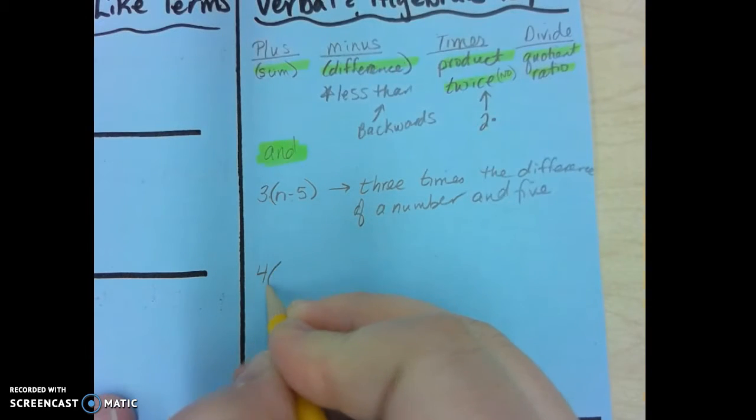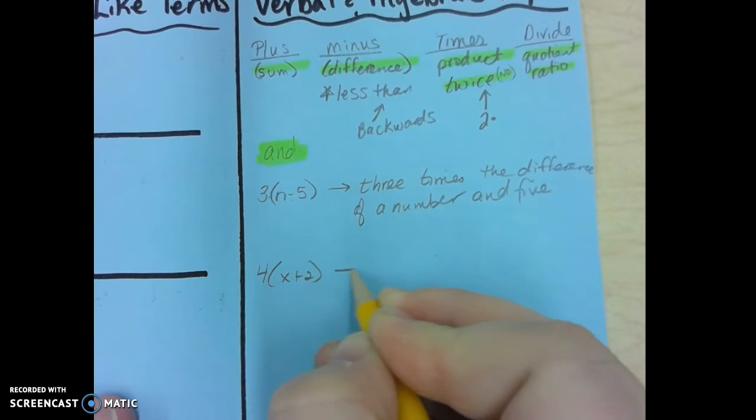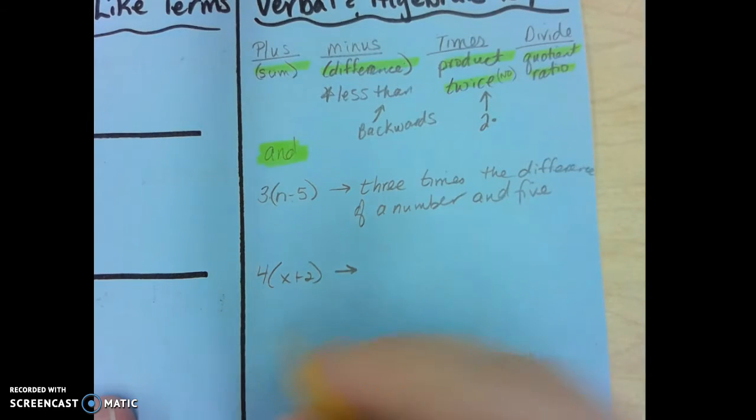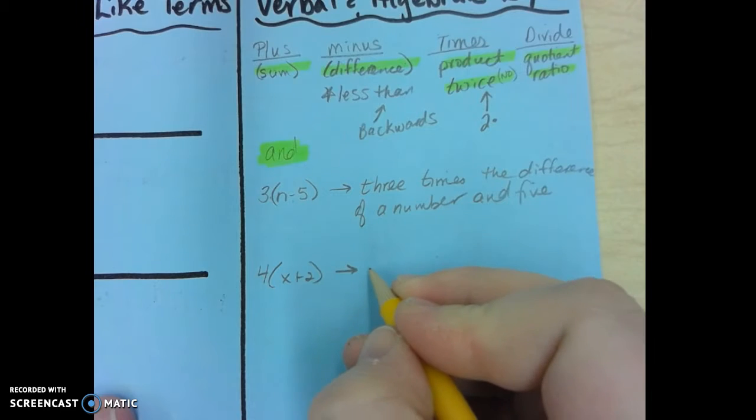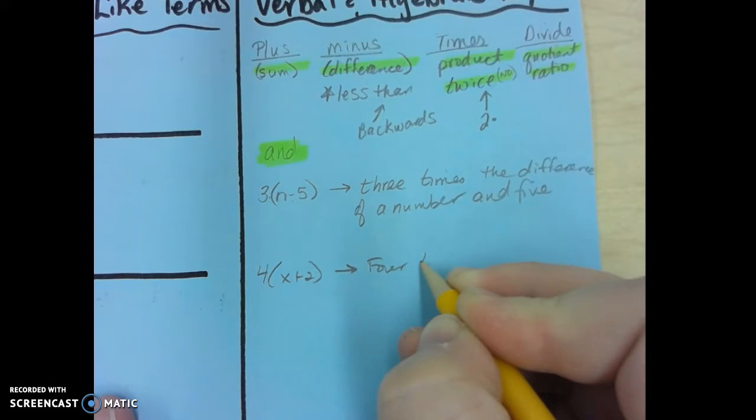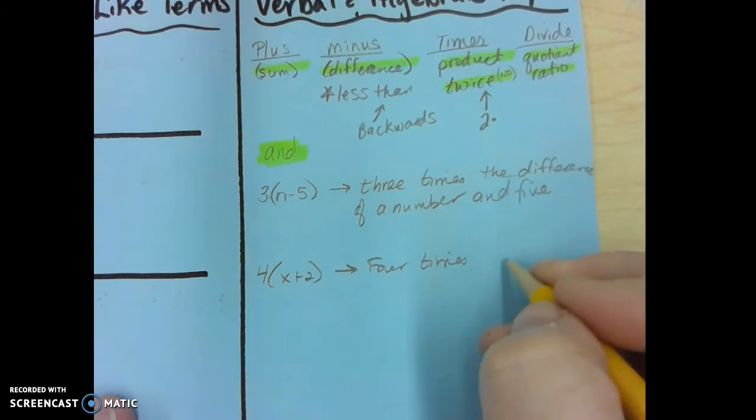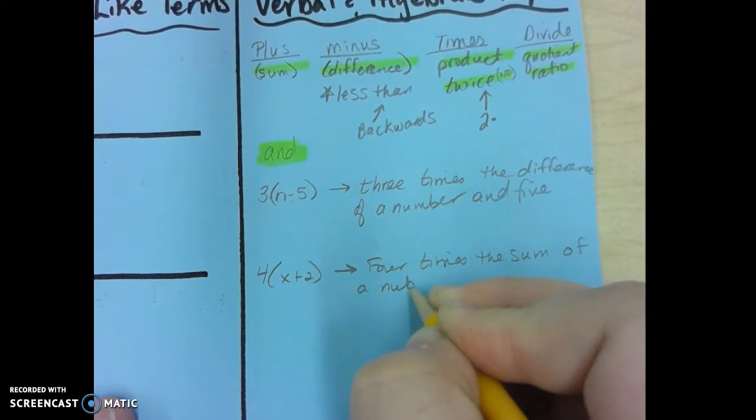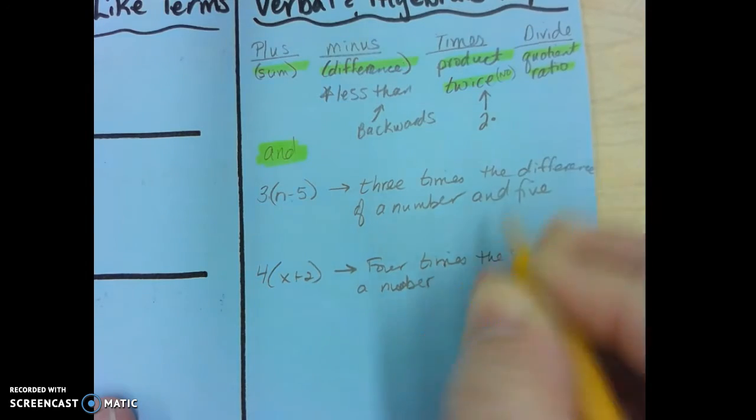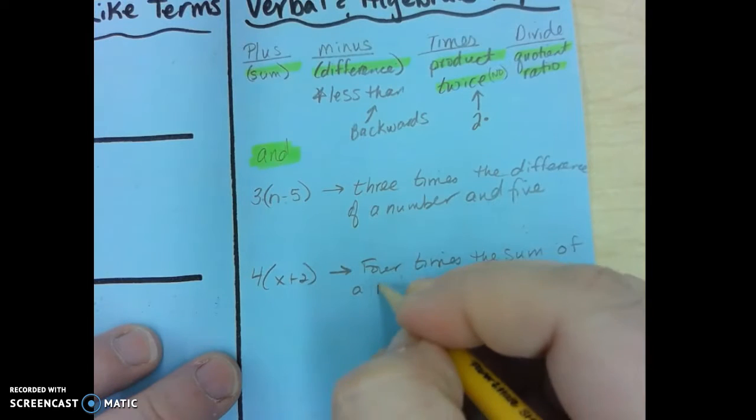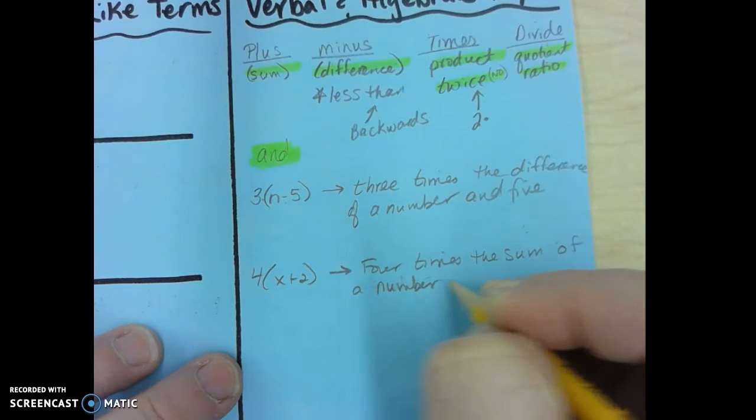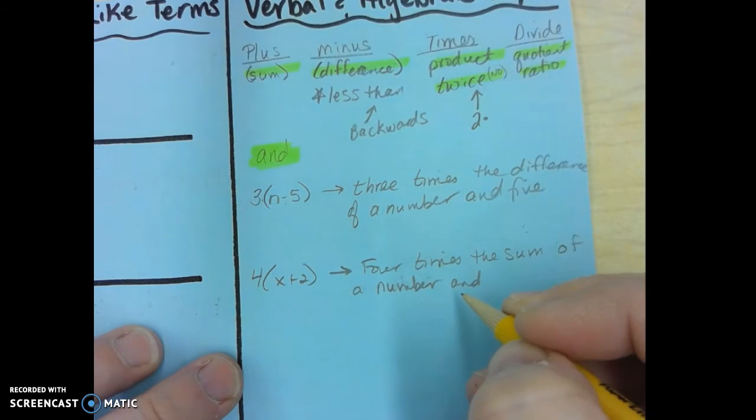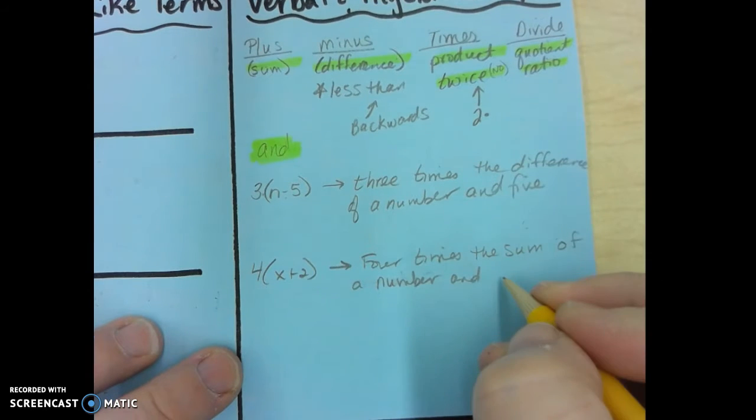Another one. 4x plus 2. It has parentheses and it has a plus, so it's got to be sum. So it's going to be four times the sum of a number and two.